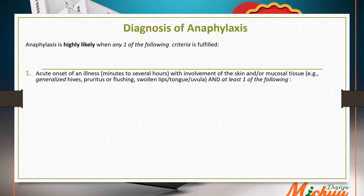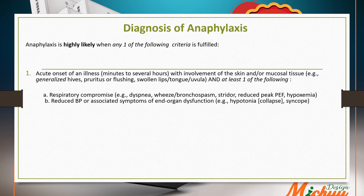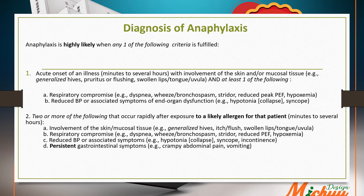Anaphylaxis is highly likely when any one of the following criteria is met. First: acute onset of illness (minutes to several hours) with involvement of the skin and mucosal tissue — such as generalized hives, pruritus, flushing, or swollen lips, tongue, and uvula — plus at least one of: respiratory compromise, reduced blood pressure, or associated symptoms of end-organ dysfunction. Second: two or more of the following occurring rapidly after exposure to a likely allergen: involvement of skin/mucosal tissue, respiratory compromise, reduced blood pressure or associated symptoms, or persistent gastrointestinal symptoms.